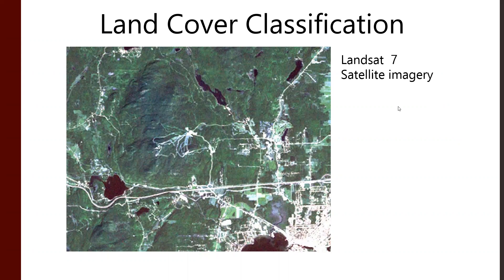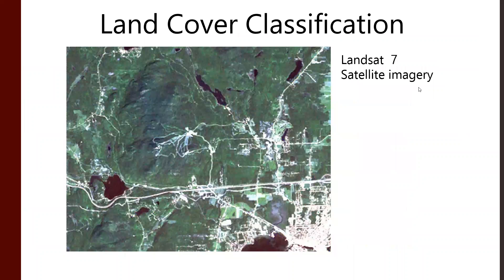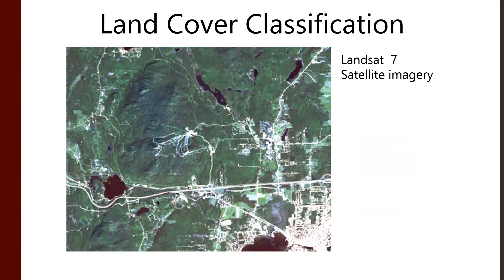We can turn this into a land cover map by using classification methods and processing techniques to say: those blue areas are water, we know that because of the infrared or spectral energy they're reflecting. That's shrubland. That's forest. That's urban, and so on.